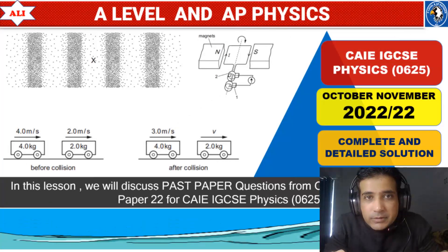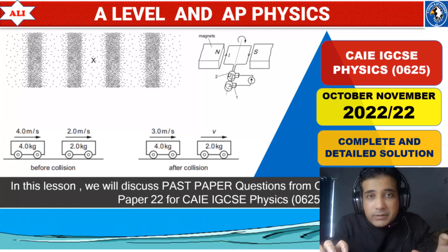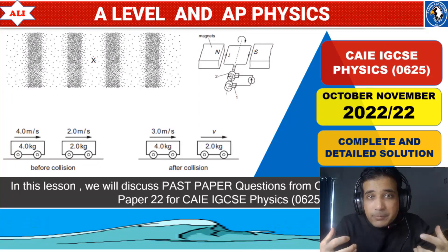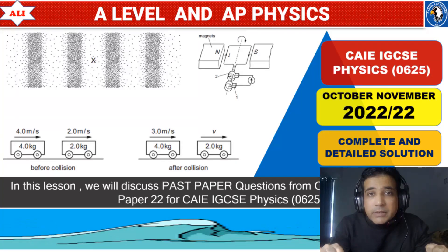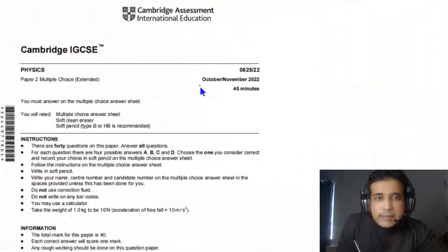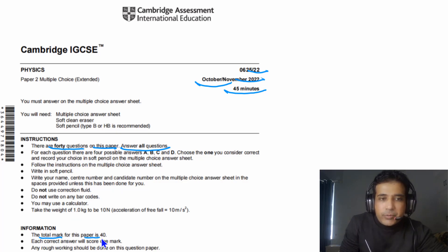Welcome to A-Level and AP Physics. In today's lesson we will discuss past paper questions from October/November 2022 Paper 2 Variant 2 for CAIE IGCSE Physics. We will discuss these questions in detail so you can improve your conceptual understanding and have a better grasp of all the topics from IGCSE Physics. The total time for this exam is 45 minutes, there are 40 questions, and the total mark is 40.